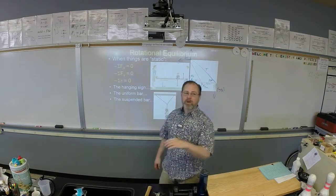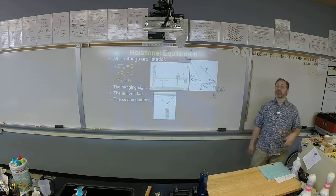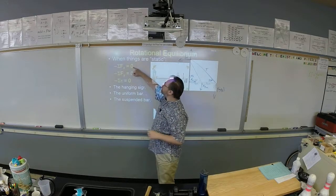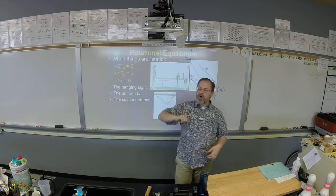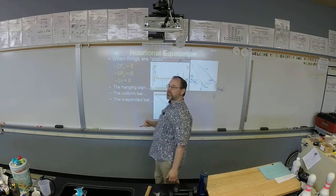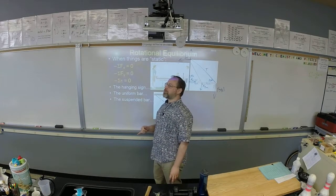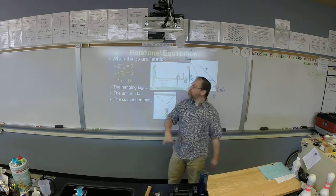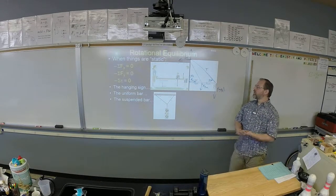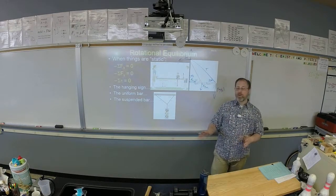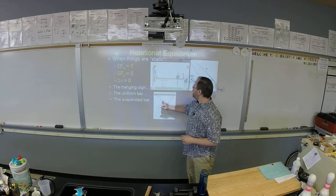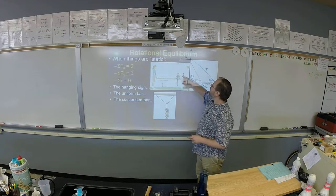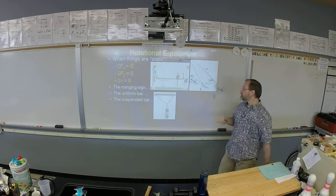So yesterday, guys, yesterday we looked at the simplest forms of things that are static. And again, when things are static, you have three conditions for equilibrium you must satisfy. The first one is that all the forces in the horizontal direction have to cancel out. The second one, all the forces in the vertical direction have to cancel out. The third one, just give up. Come back this afternoon or something. The third one is that all torques must cancel out.